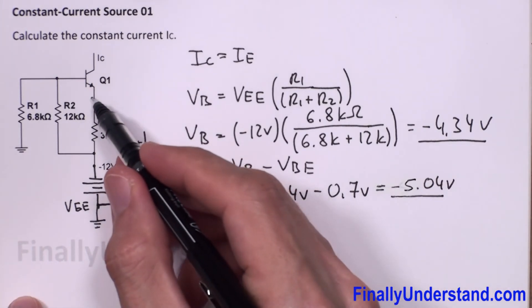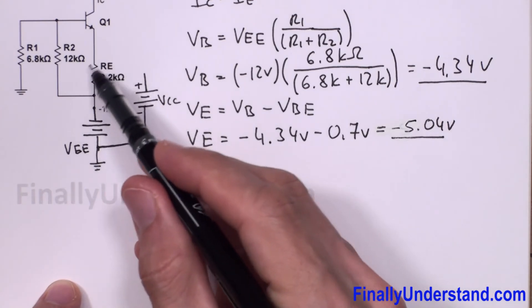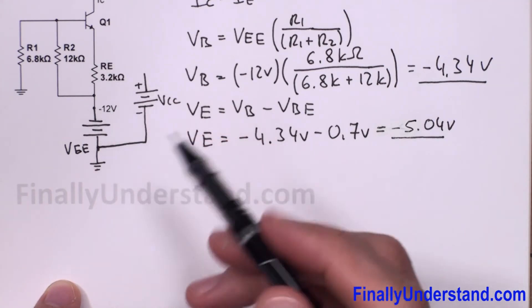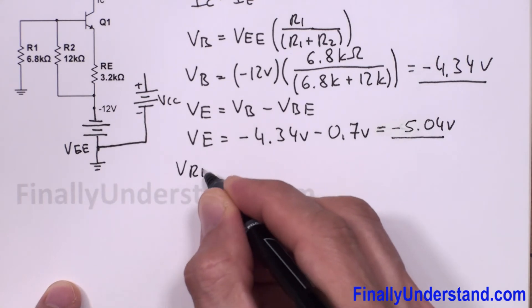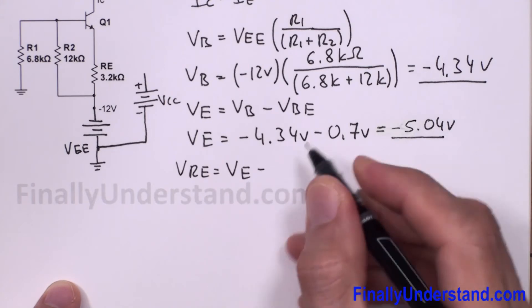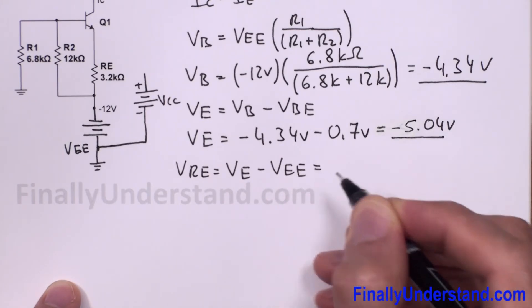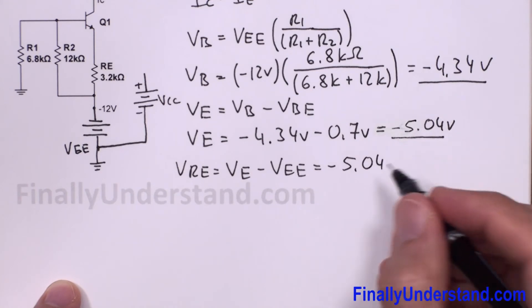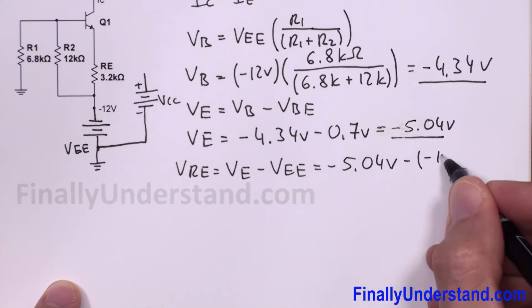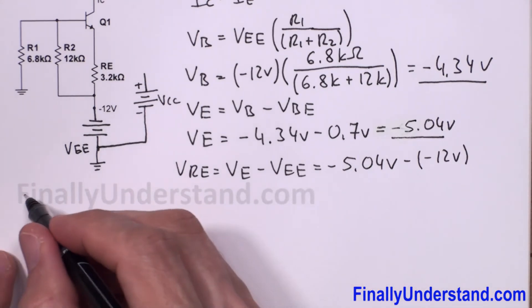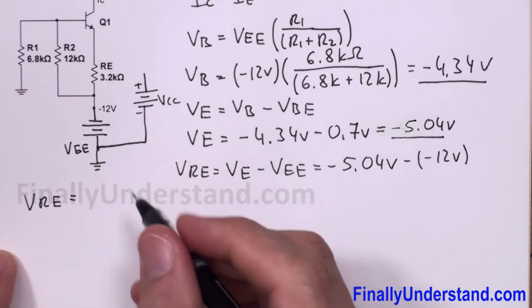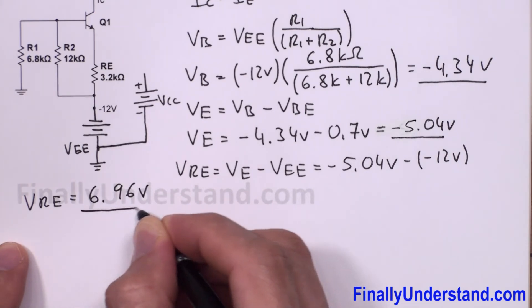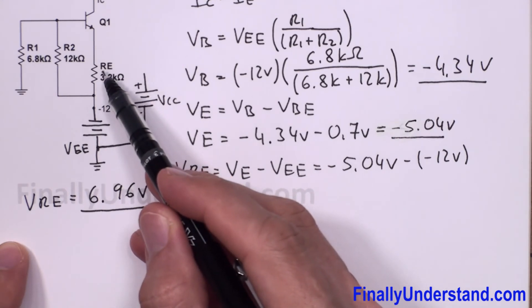Next I find the voltage across resistor RE, which is the difference between VE and VEE. So VRE equals VE minus VEE: that is negative 5.04 volts minus negative 12 volts, which gives VRE equal to 6.96 volts. This is the voltage across resistor RE.